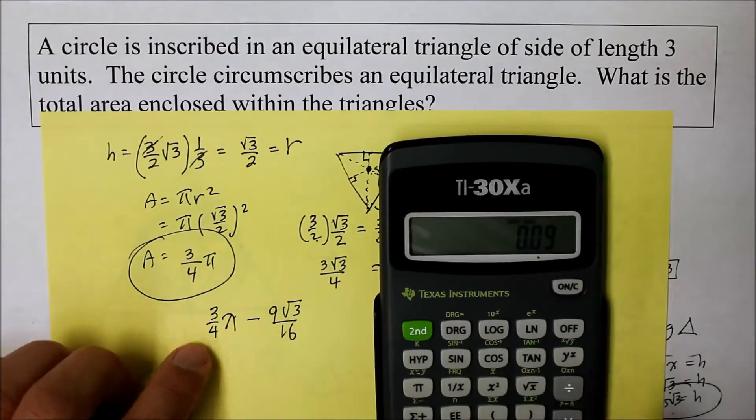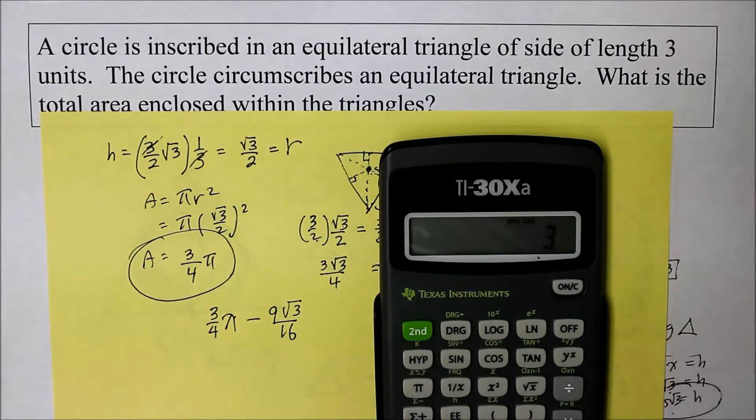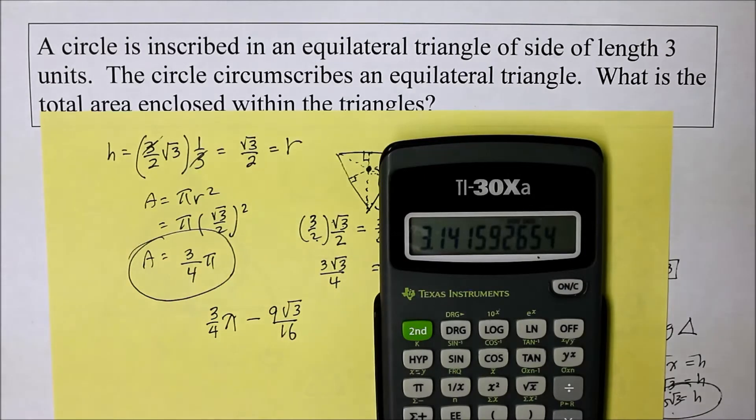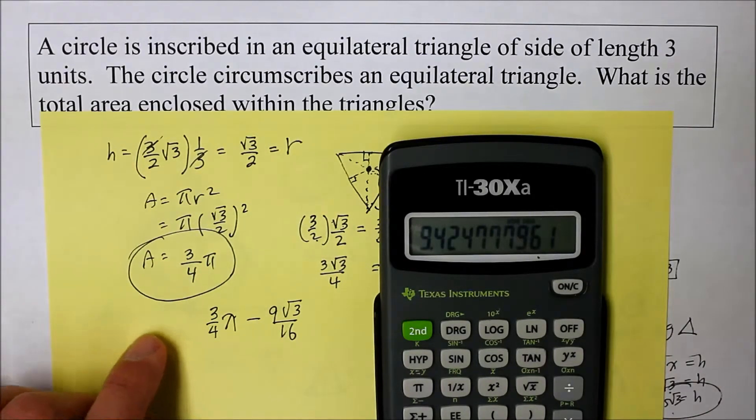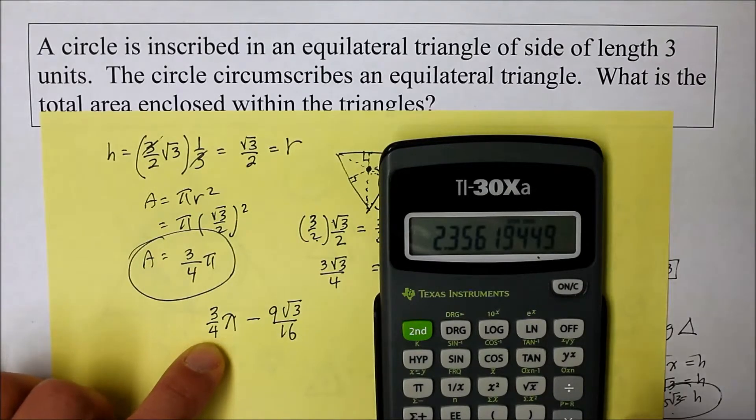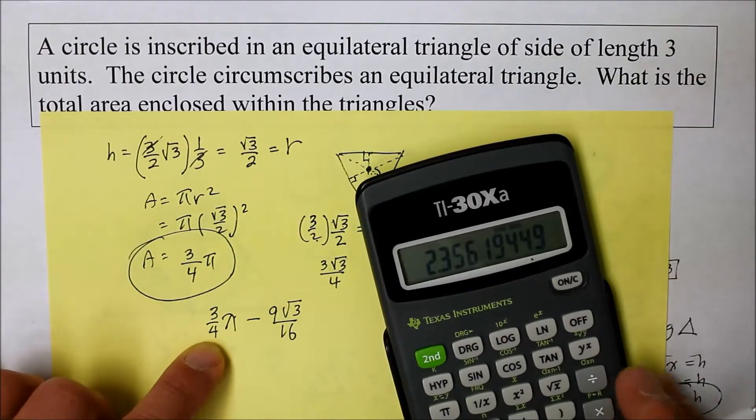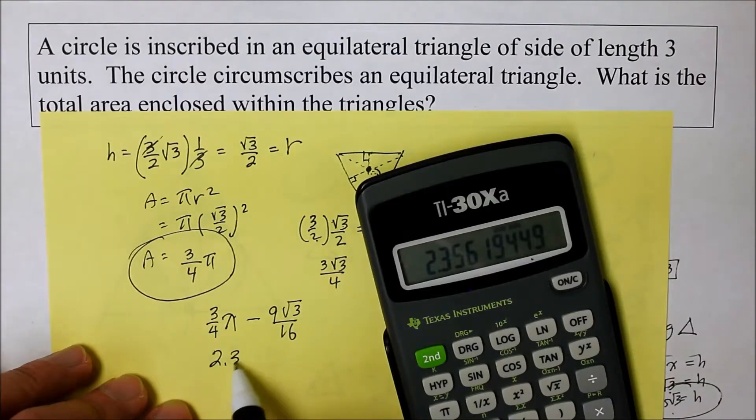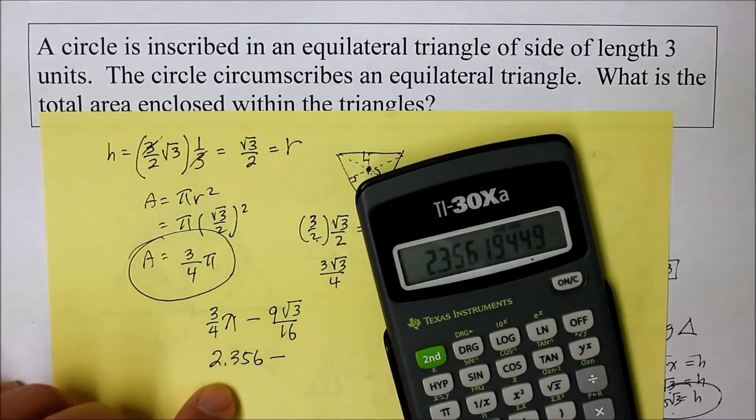So here we go. 3 over 4 pi. Okay, that's 3 times pi, which is 3.14 blah, blah, blah. That equals 9.4. Divide that by 4. And I get, what does that say? 2.356. Let's just say 2.356.